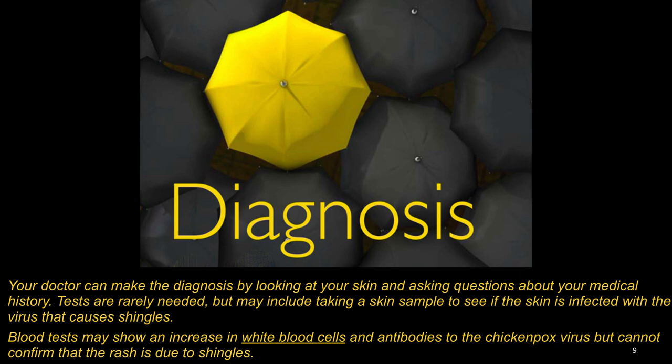The diagnosis. Your doctor can make the diagnosis by looking at your skin and asking questions about your medical history. Tests are rarely needed, but may include taking a skin sample to see if the skin is infected with the virus that causes shingles. Blood tests may show an increase in white blood cells and antibodies to the chickenpox virus, but cannot confirm that the rash is due to shingles.